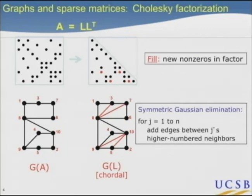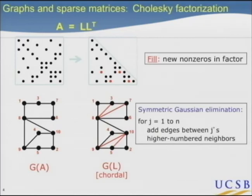Just by looking at the graph, there's a simple recipe: we go through the vertices in order — through the pivots — and as we touch each vertex, we add edges between its higher-numbered neighbors. That's just describing the rank-one update at one step of Gaussian elimination. Don Rose showed that if you start with a symmetric matrix and do symmetric factorization, the factor you get is actually a chordal graph — a graph in which every cycle of more than three vertices has a chord short-cutting it.